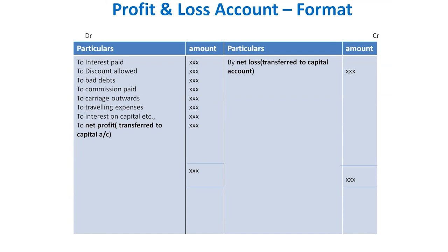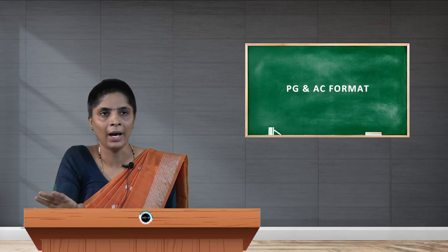To ascertain the net profit or net loss, we take the total of both sides. For example, if the credit side total is five lakh and the debit side total is three lakh fifty thousand, the higher total — five lakh — is taken on both sides. Since the credit side is more than the debit side, income exceeds expenses, and the result is net profit. If the debit side exceeds the credit side, the result is net loss, which is transferred to the capital account.